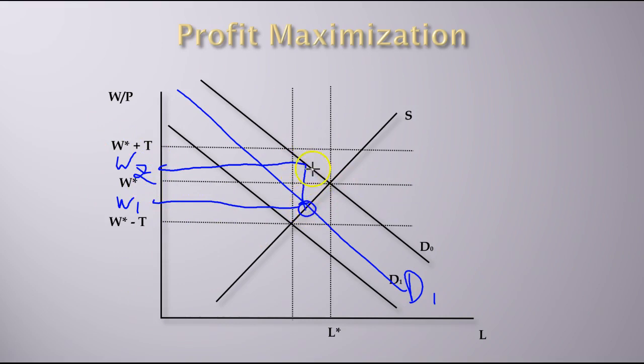You can see that the tax gets shared because the difference between these two lines is the tax. The employees see the wage go from W* down to W1, which isn't the full tax. The employers see what they pay go from W* to W2, which again isn't the full tax, and so the tax gets split between them.